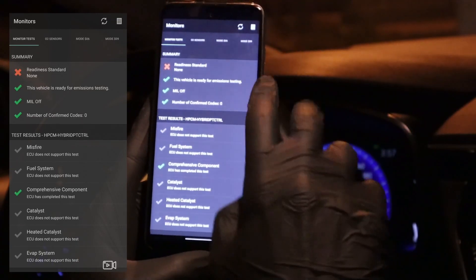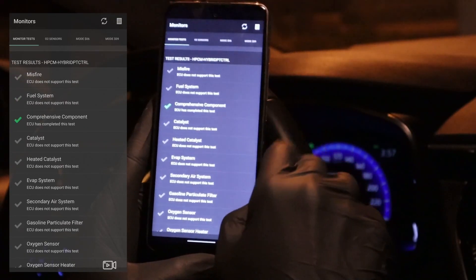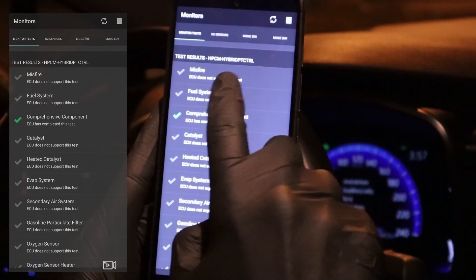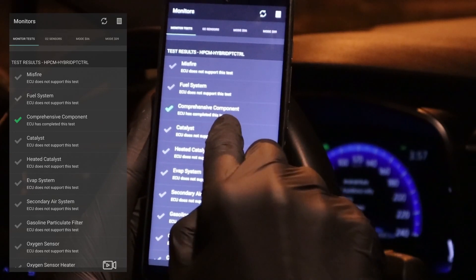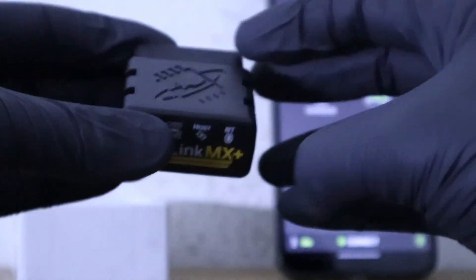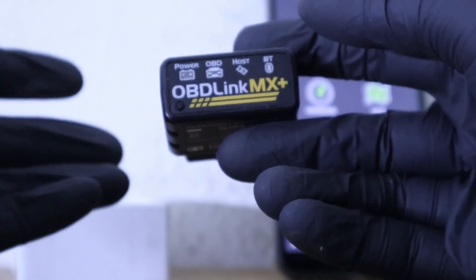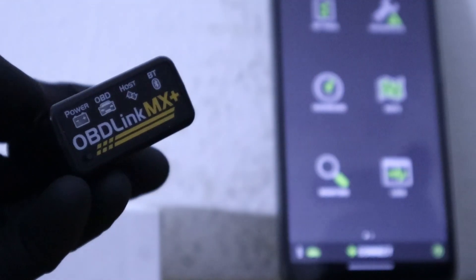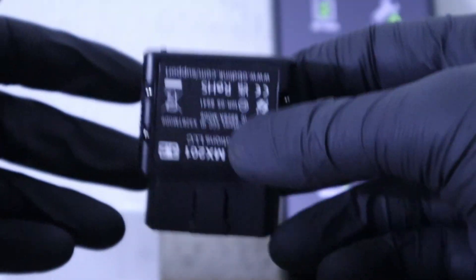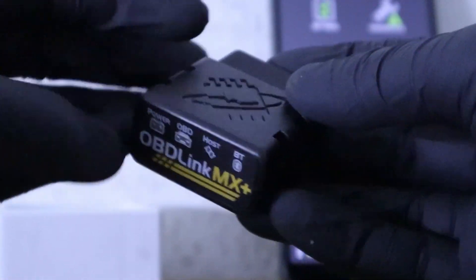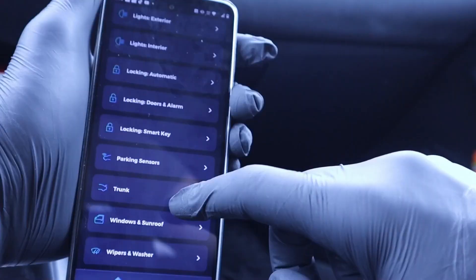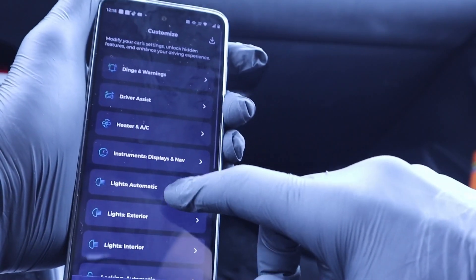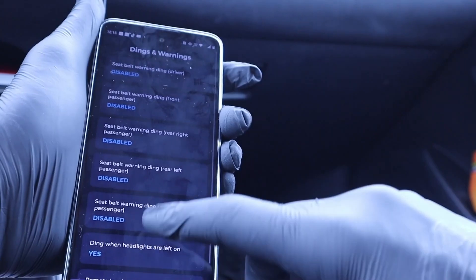Well, outside of the fact that this adapter is maybe three times faster, there are two main advantages. First one is that OBD Link MX Plus can connect not just to Android or iOS, but you can also use it for laptop OBD2 software, so you can connect it to your computer. And the second reason is it's best for using with ECU coding apps. The apps like Carista or Beamer Code are designed to unlock hidden features of your vehicle.